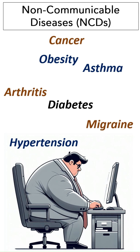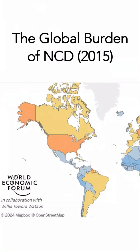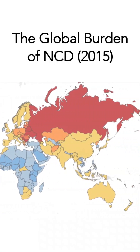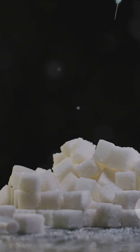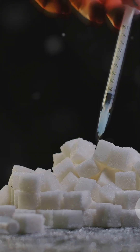In the last video, we were looking at non-communicable diseases and how these diseases, in spite of being not communicable, are spreading in the world like an epidemic. The question was: what causes these diseases? To understand that, let us look at what exactly happens in some of these diseases. For example, consider diabetes type 2, which is a common NCD.